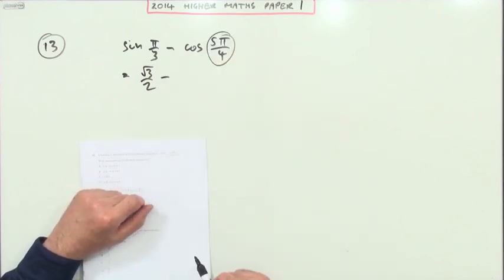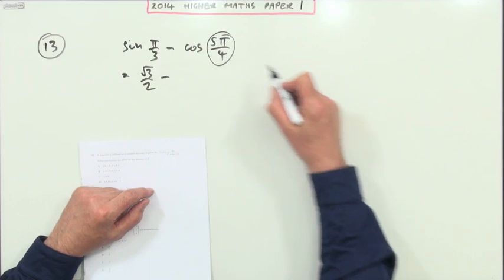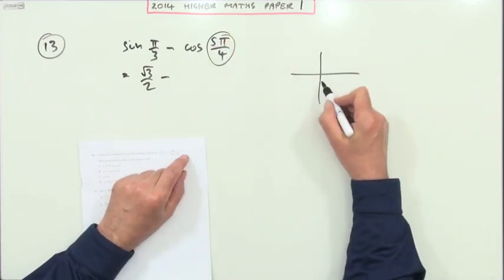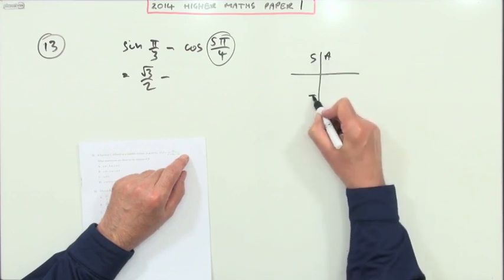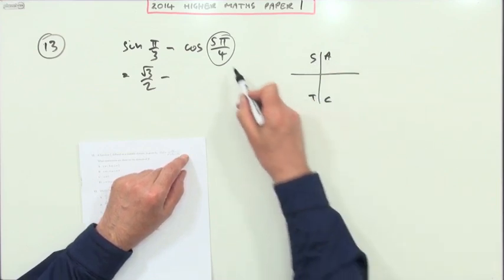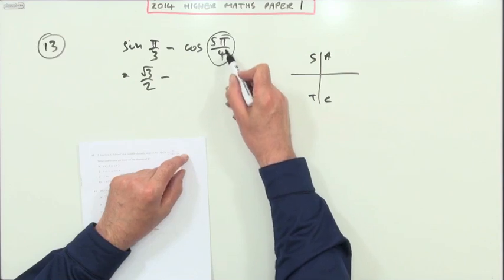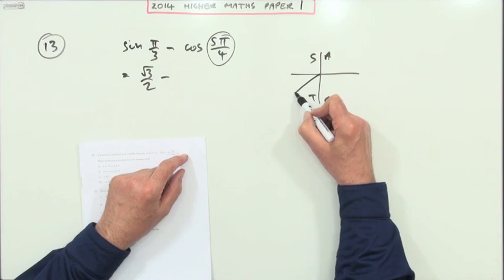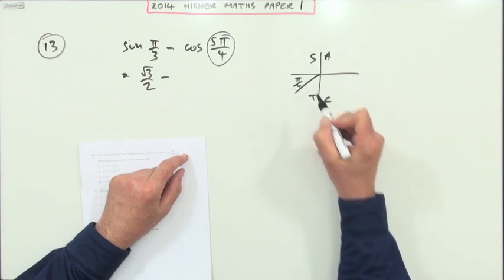So you'll have to find what the equivalent acute angle is to 5π upon 4. For that, you're going to use the CAST diagram: all, sine, tan, cos. 5π upon 4, that's beyond π. π would be 4π upon 4, so this takes you here. It's another quarter of π beyond.